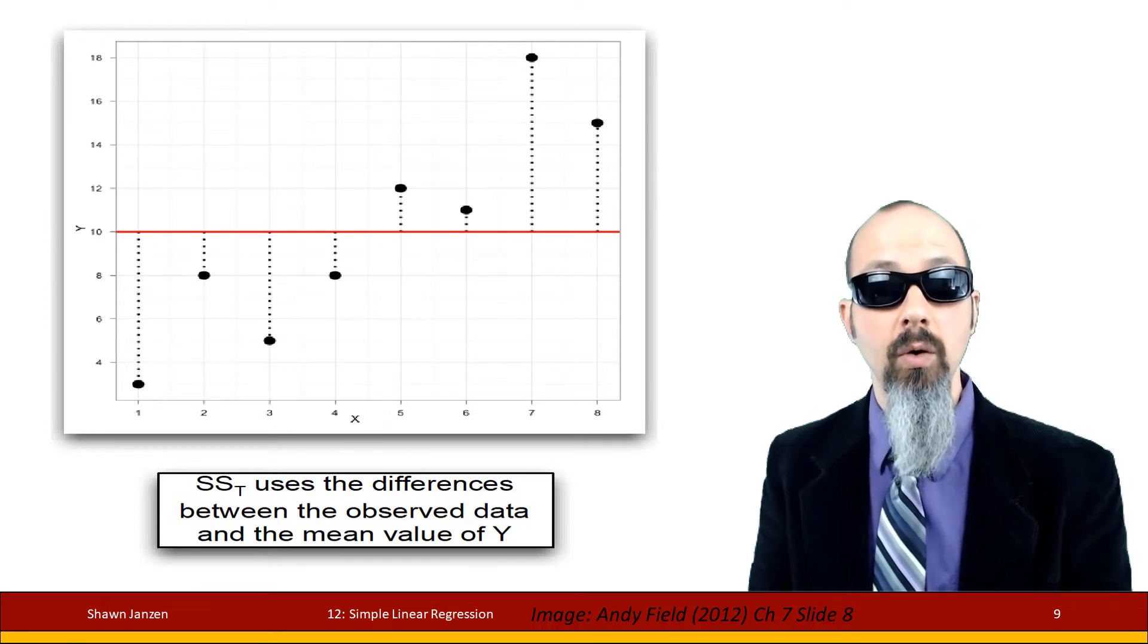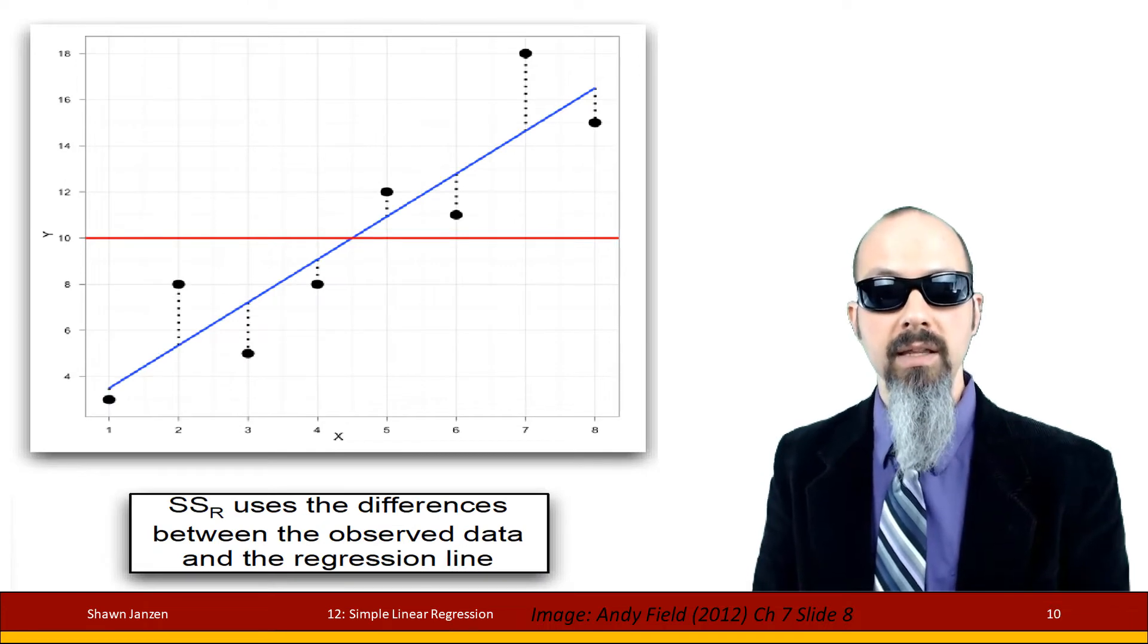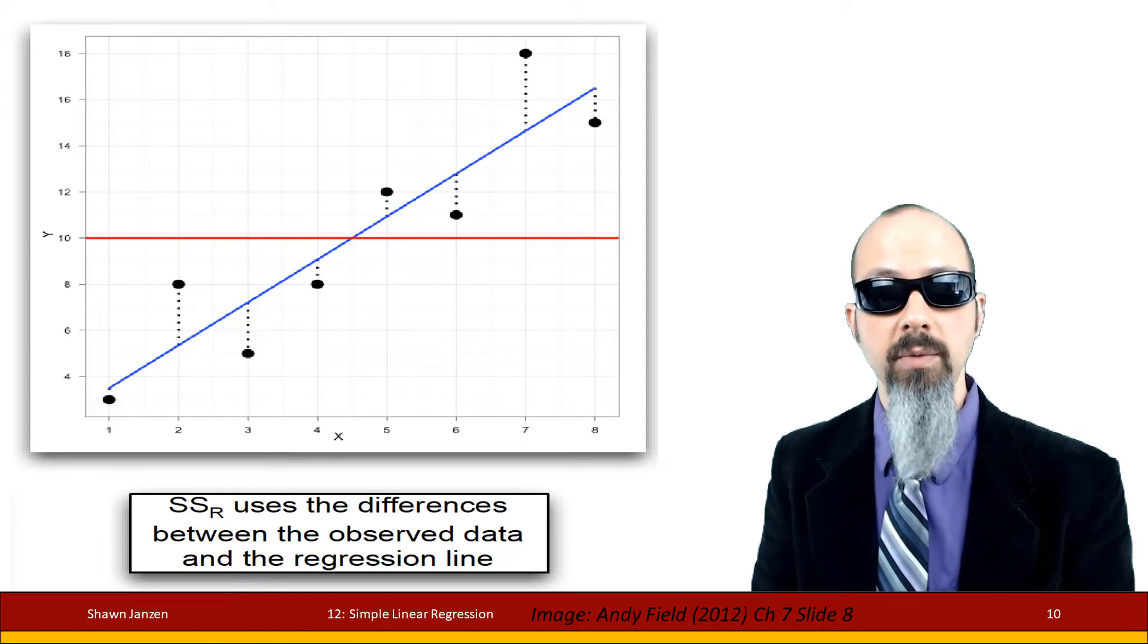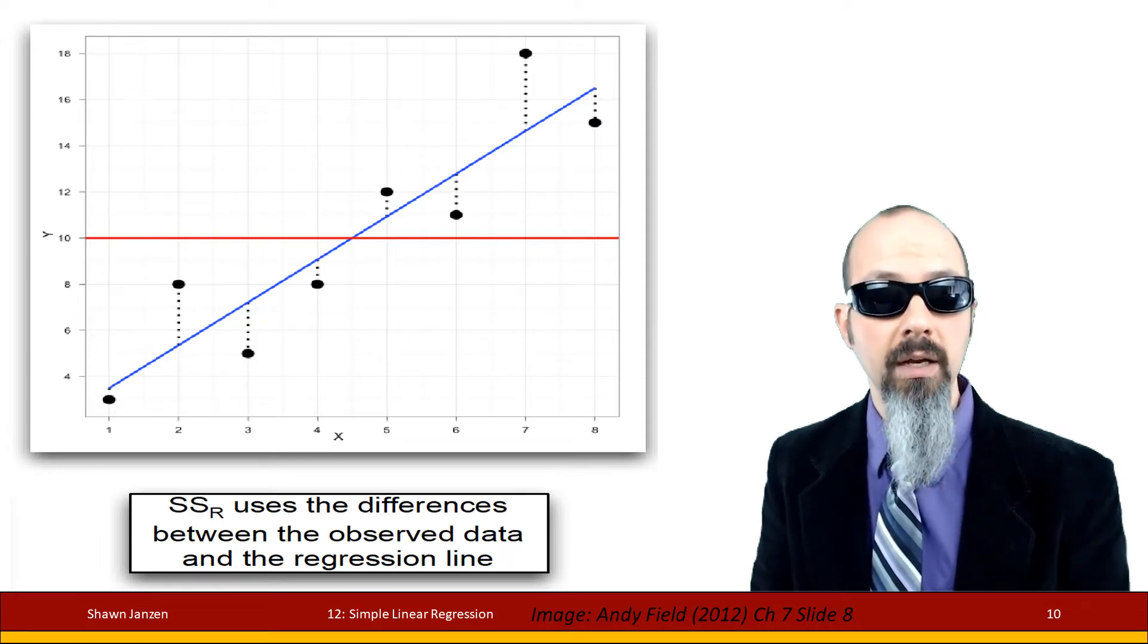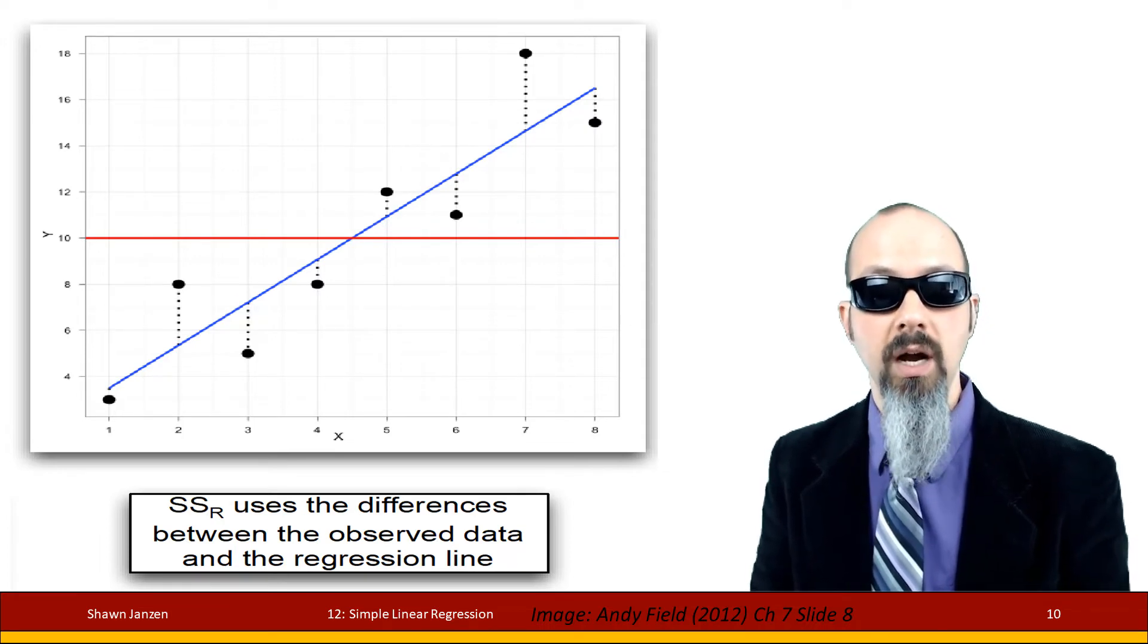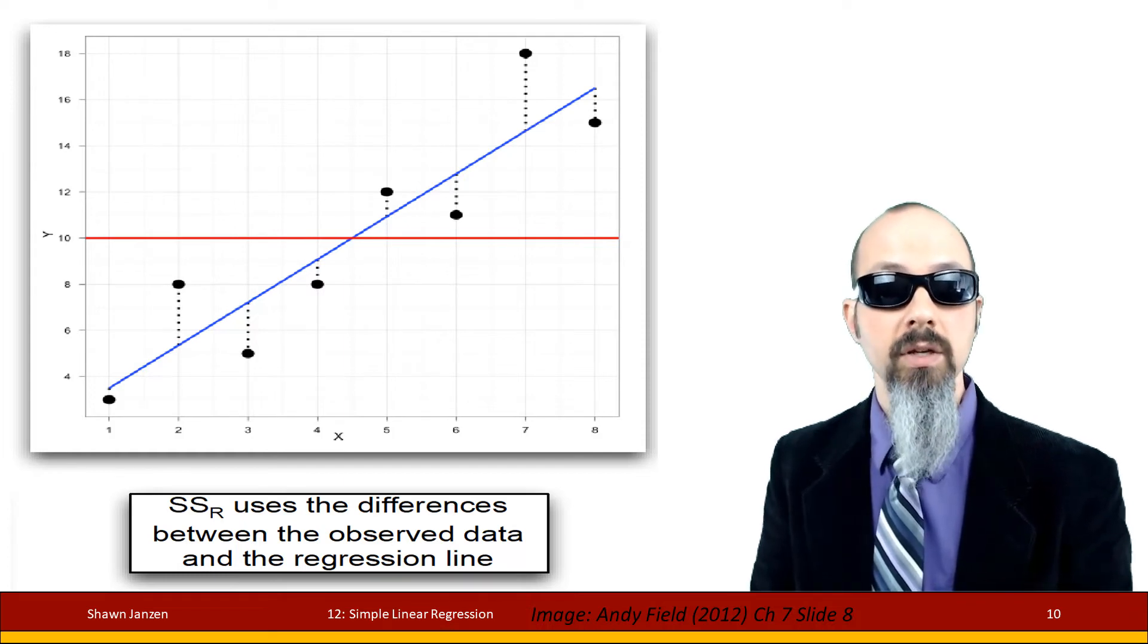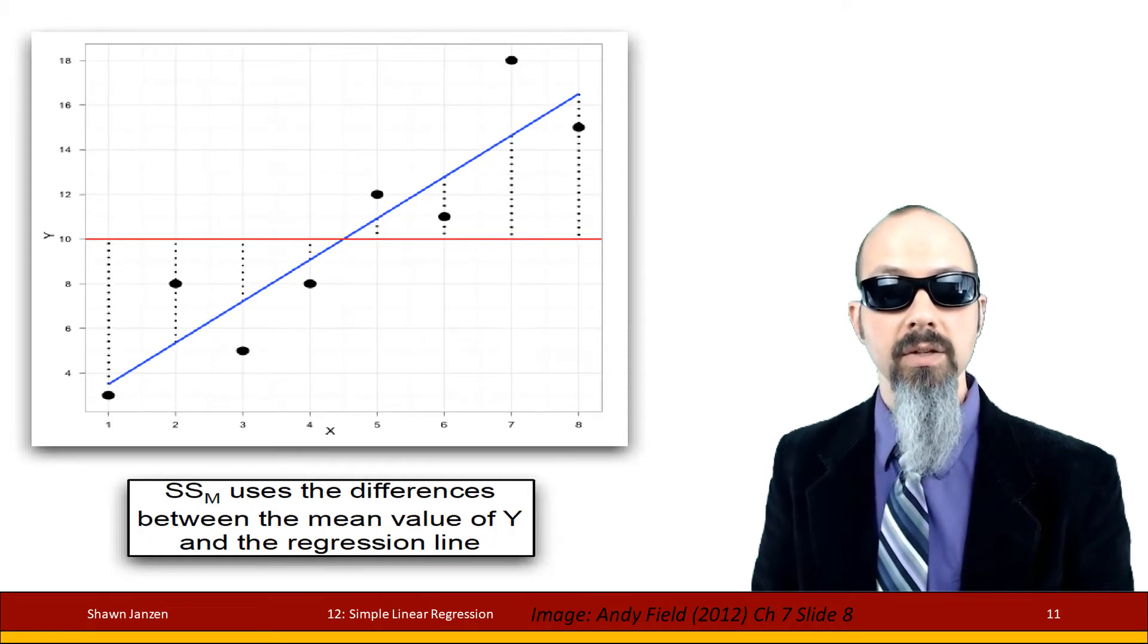The sums of squares residuals: we said before the residual amount is the distance from your plotted points to your regression line. So the sums of squares residuals are the distances from all of your plot points to that regression line.